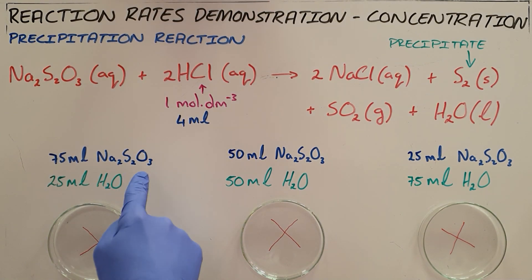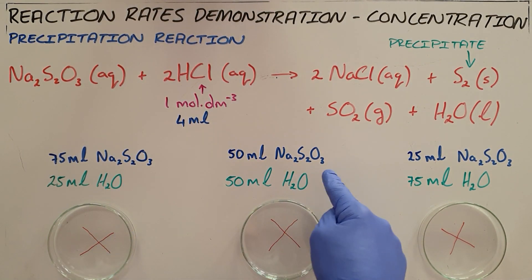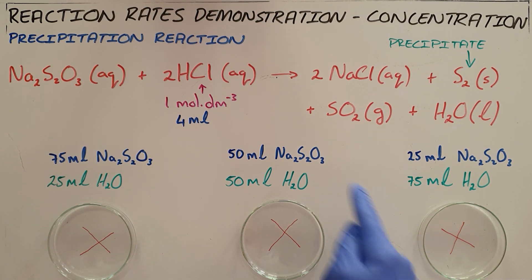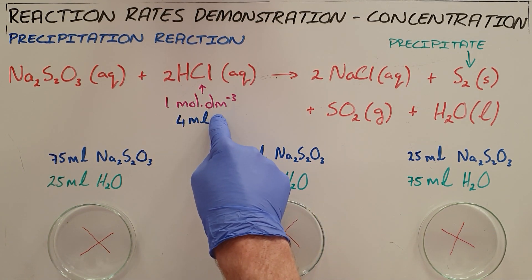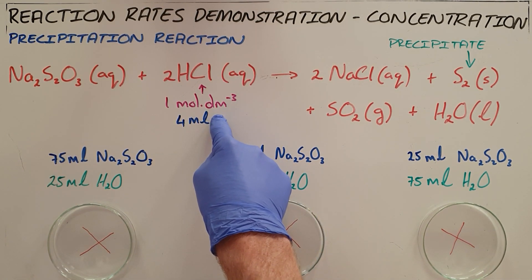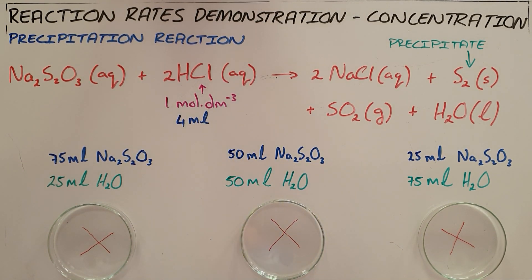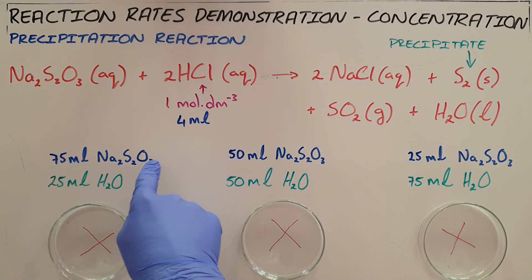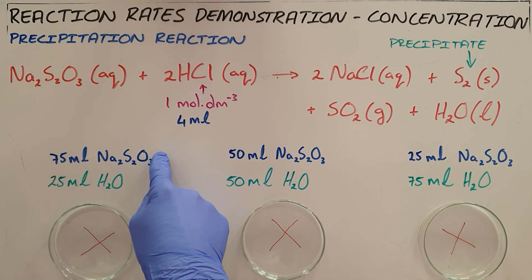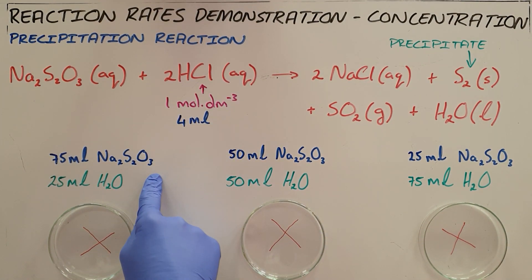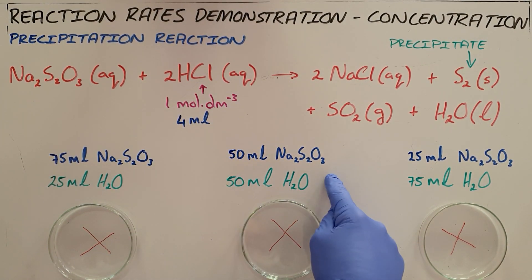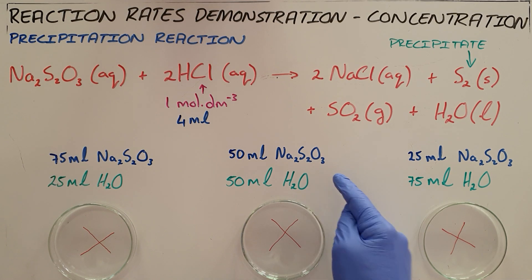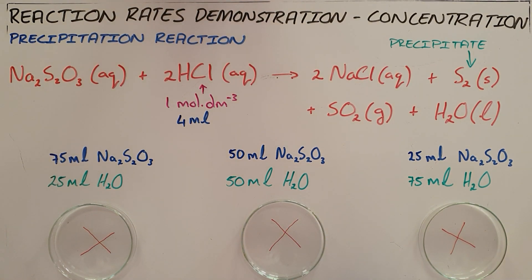What we've got is different dilutions of our sodium thiosulfate. The concentration and quantity of hydrochloric acid remains constant, and so we're going to see what effect changing the concentration or the dilution of sodium thiosulfate has on the rate at which this reaction proceeds.